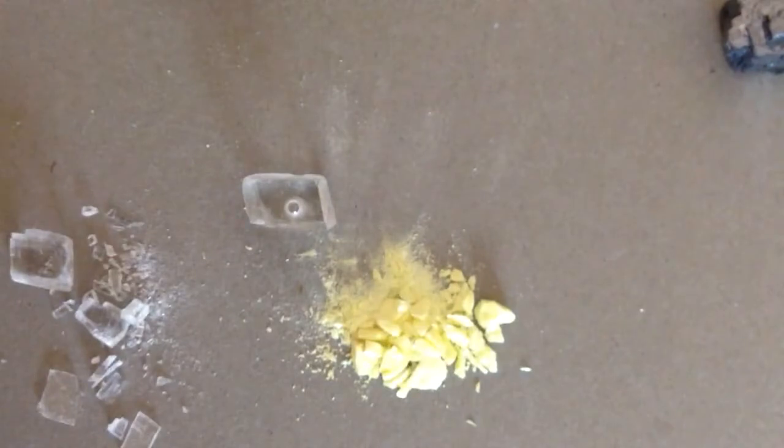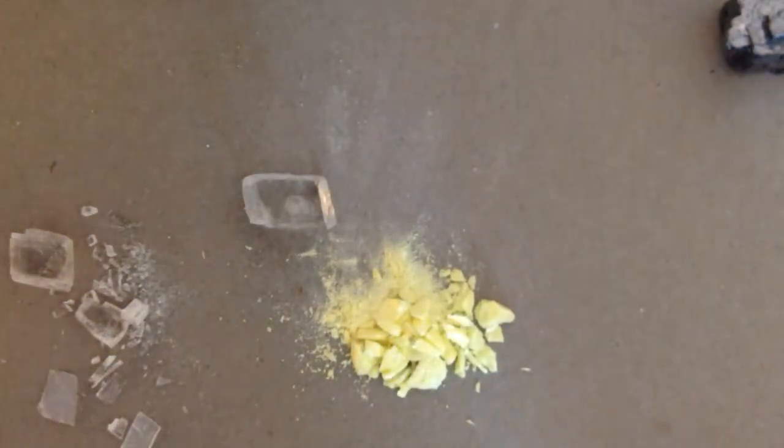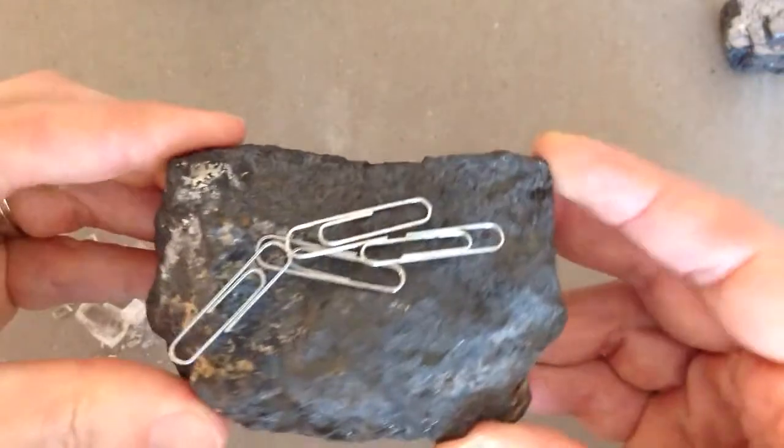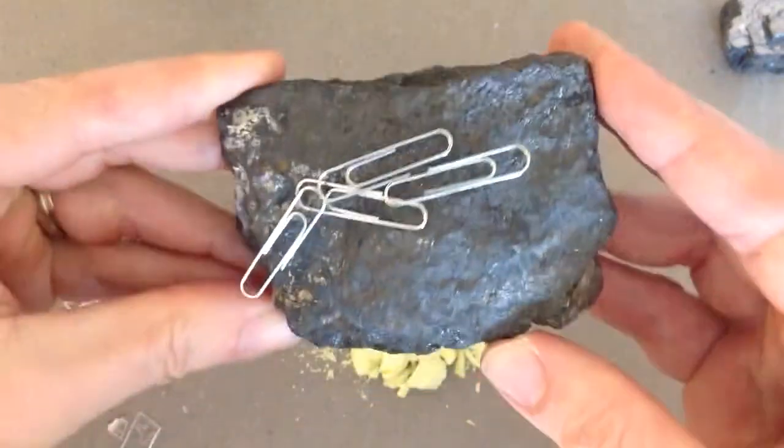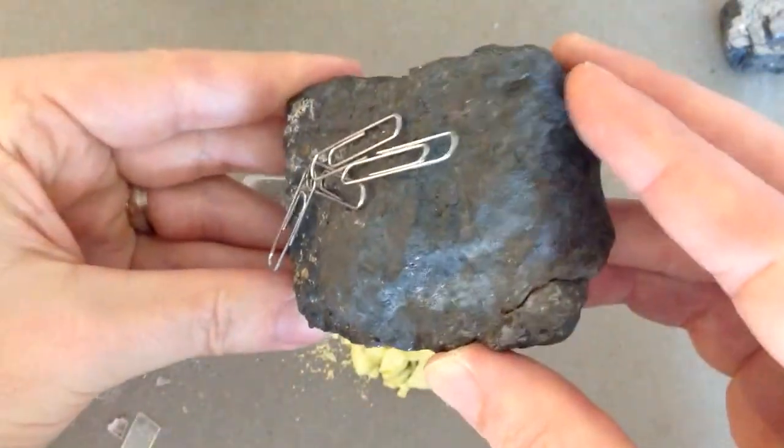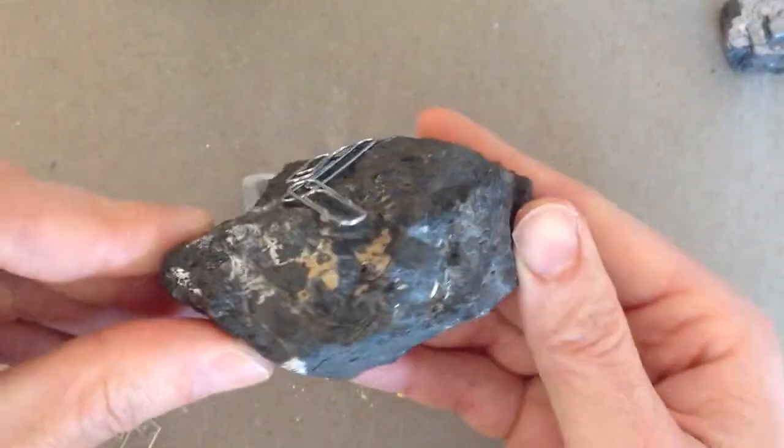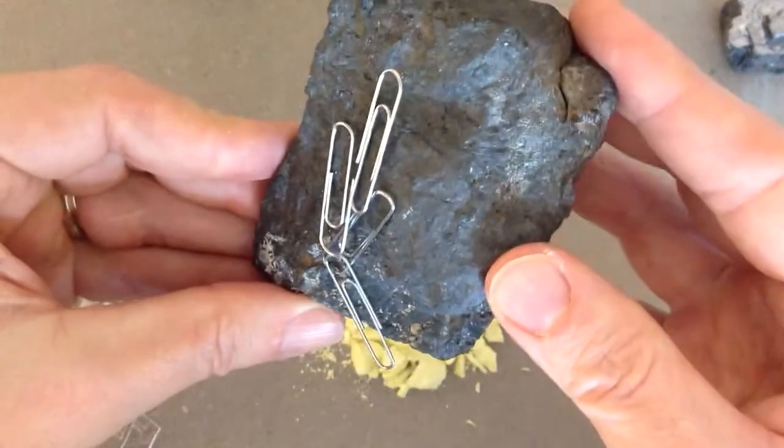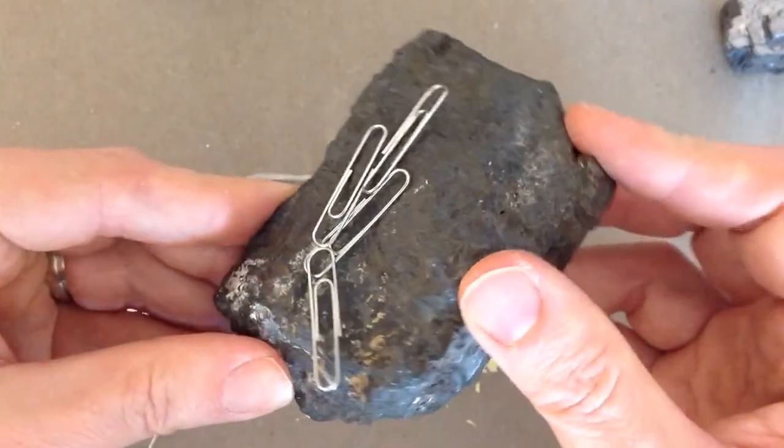And then another property that some minerals have. This is a mineral called magnetite. It is naturally magnetic. So the magnetic properties of this mineral allow the paper clips to be stuck directly to it.